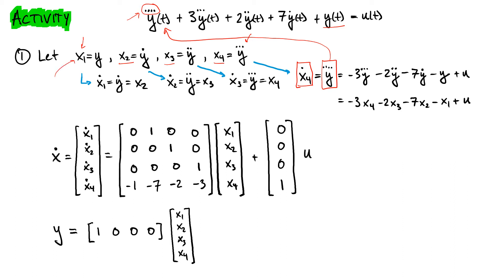The magic in the state space representation is that when I take the derivative of X1, I take the derivative of its definition Y, giving Y dot, which is exactly what X2 is defined to be. So X1 dot equals X2.